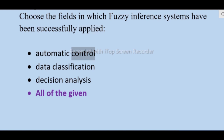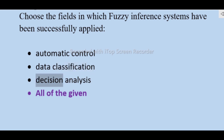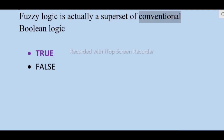Choose the fields in which fuzzy inference systems have been successfully applied: automatic control, data classification, decision analysis — all of the given. Fuzzy logic is actually a superset of conventional Boolean logic — true or false — true.